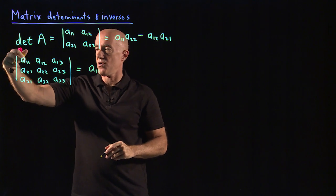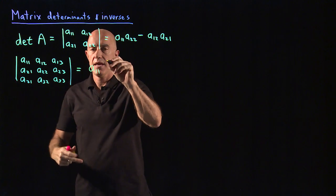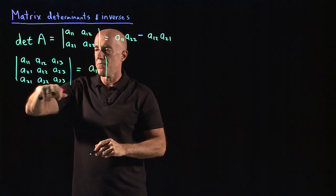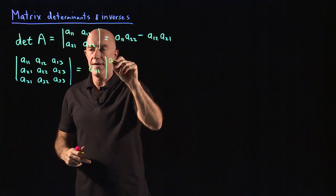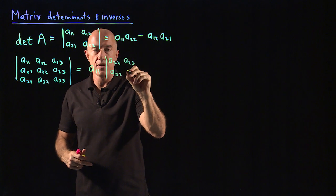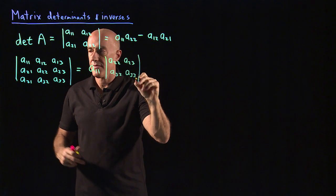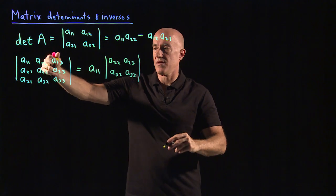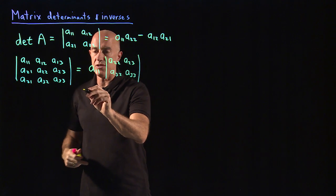So you start with A11 element and then you cross out the first row and the first column. And then you multiply this by the smaller two by two determinant of A22, A23, A32, A33.